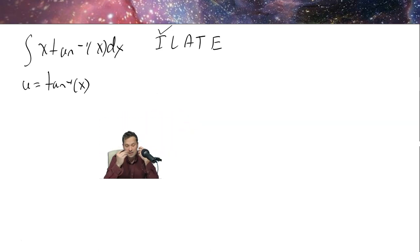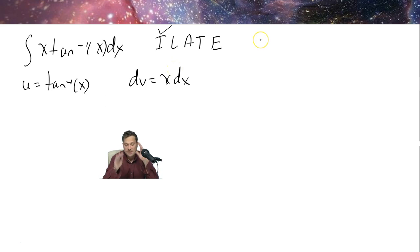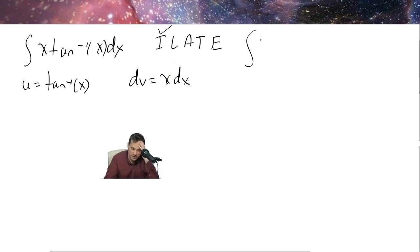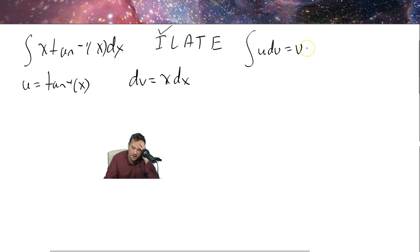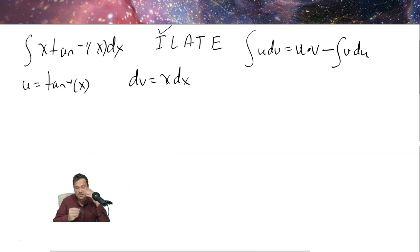The other portion, dv, will be set equal to x dx. Let's write down the pattern for integration by parts: the integral of u dv equals u times v minus the integral of v du.